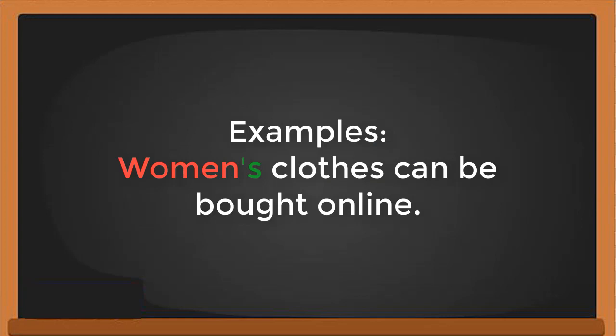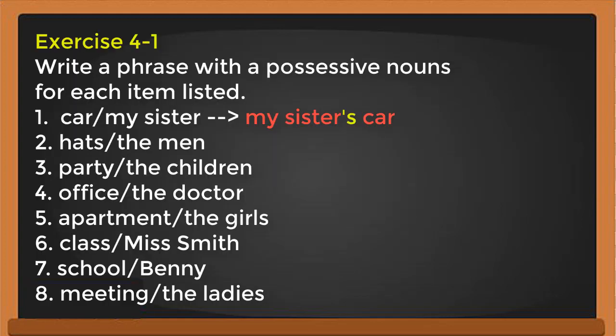Now let's look at Exercise 1. I want you to write a phrase with a possessive noun for each item listed. For example: car / my sister — you write 'my sister's car.' You add apostrophe-s after 'sister' because it indicates possession.